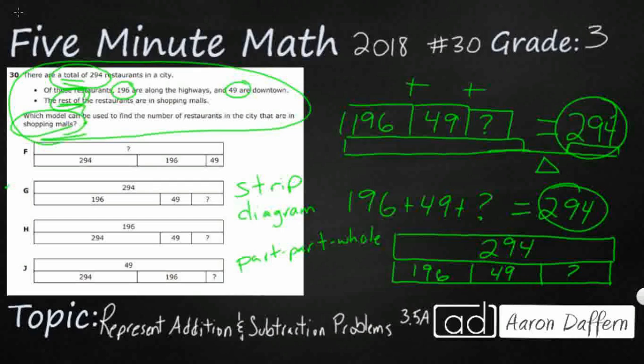So when I draw it like this, I don't have to include the plus signs because the strip diagram shows you that when you connect these, these connecting bars are automatically plus signs. And so when you're looking at that, you see there's only one answer selection that actually has the whole total up on top, 294. And so they did make it proportional. They made that 196 much larger than the 49, which makes sense. So our answer is going to be G.